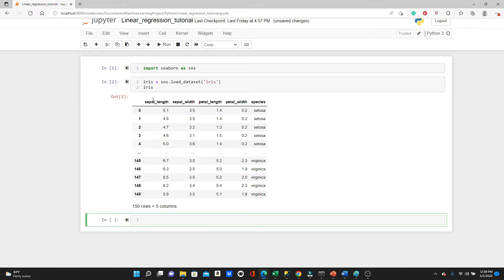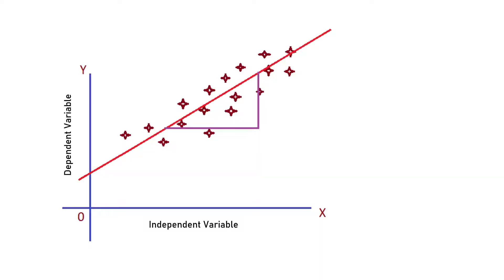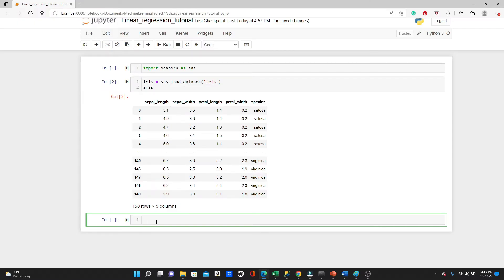For a simple linear regression problem, we do not need all these variables. If you remember this diagram from my last video, in simple linear regression, we have only one dependent variable and one independent variable. So we need one training feature — this is the machine learning language — and we need one label, the dependent variable. We will keep only two variables and exclude the rest.